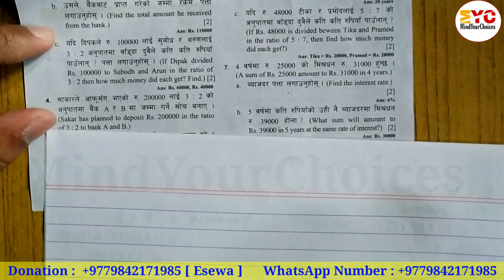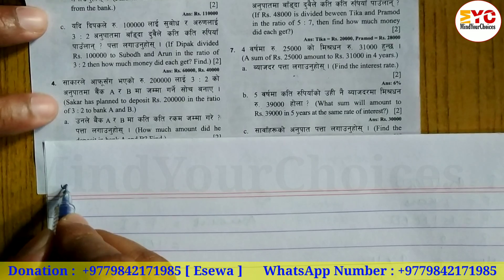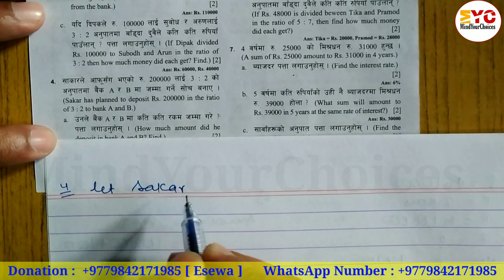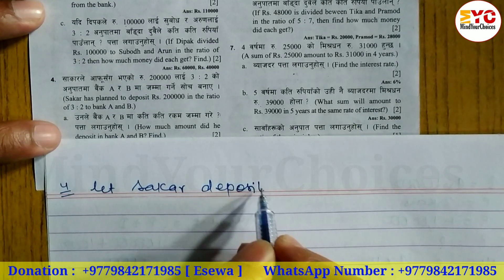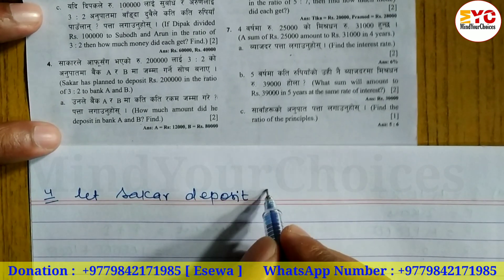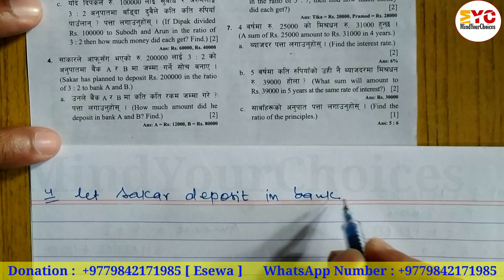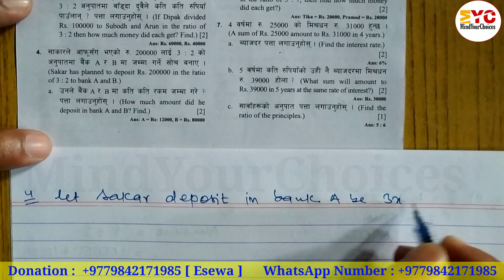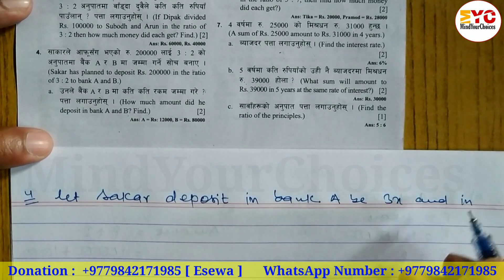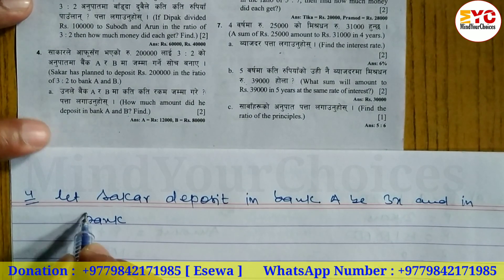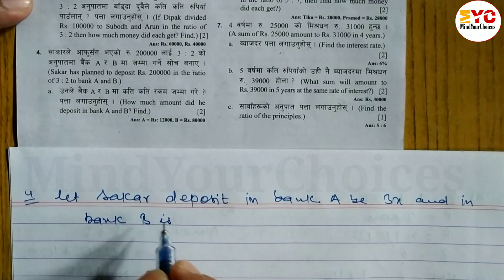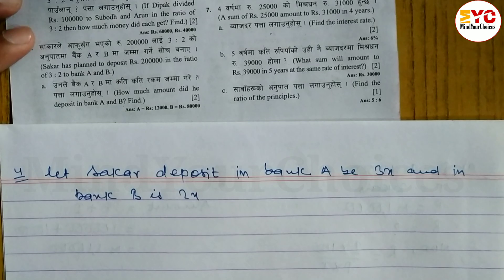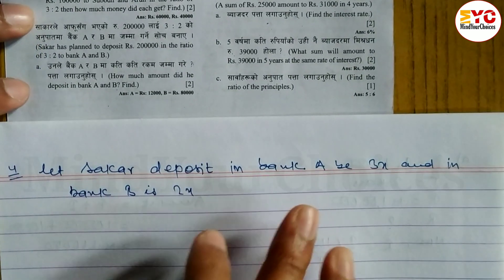So let's do it. Question number 4. Let the deposit Sarkar makes in bank A be 3x and in bank B be 2x. Sarkar deposited in 3 to 2 ratio, so bank A is 3x and bank B is 2x.